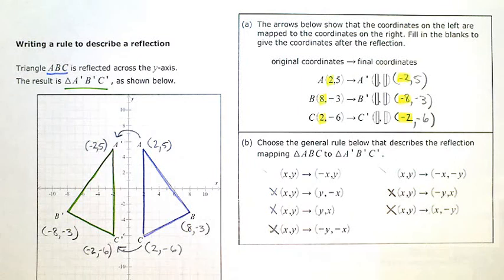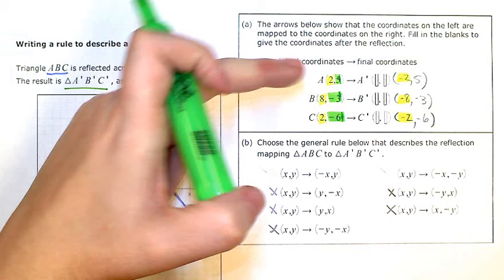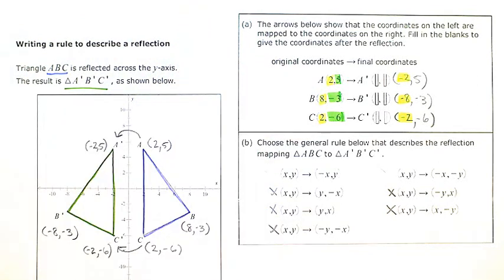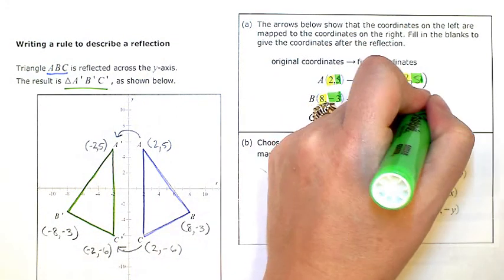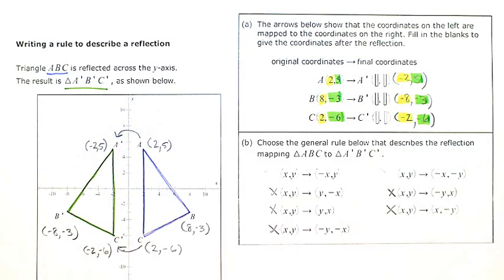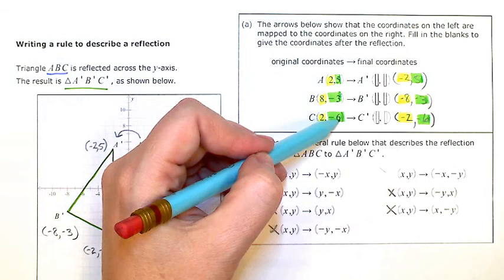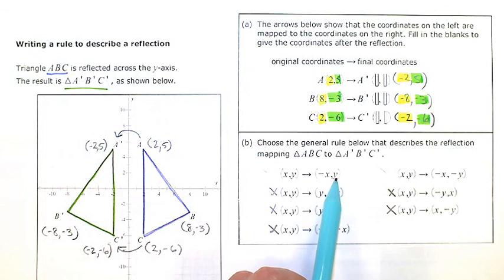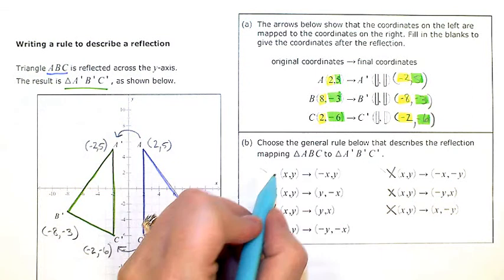So now I'm going to look at my y-coordinates. So I start with 5, negative 3, negative 6, and if I look over here, they stayed in the y position, and they didn't change at all. 5, negative 3, negative 6. So whatever I had here, I have exactly the same thing there. So if I have a y here, I need exactly the same thing there. Here, my y changed signs. So this one's out, and that one is my rule.